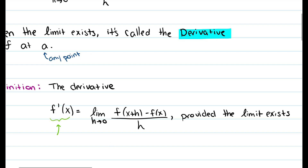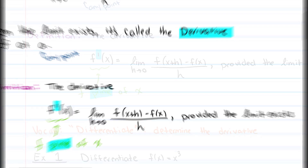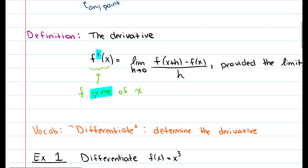We read f prime of x with the apostrophe mark represented by the word 'prime.' One thing that's important to know is the vocabulary and terminology that's going to be used. If we're asked to differentiate, it just means to determine the derivative. So if we were asked to differentiate a function, it means to take the derivative of that function.